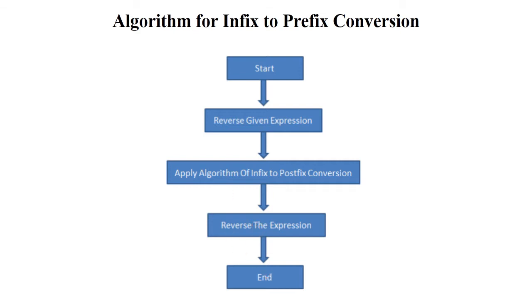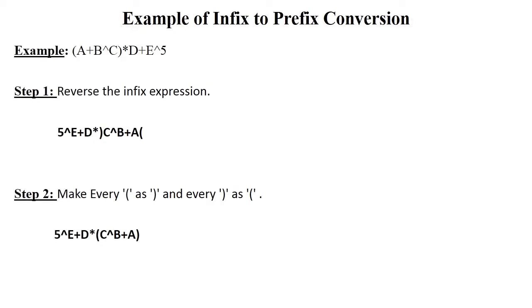Let's see the example. The given expression is A plus B exponential C — this string is in infix format because the operator is placed between the operands. You need to convert this into prefix format. The first step is to reverse the infix expression — write the given expression in reverse format, for example: 5 exponential E plus D.